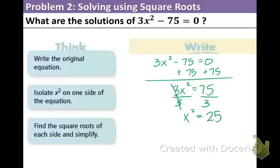Oh, that's a nice number. And the last step is, in order to get the x by itself, we have to take the square root of both sides. Square root, square root. When you do that, you need to account for the positive and negative answer.